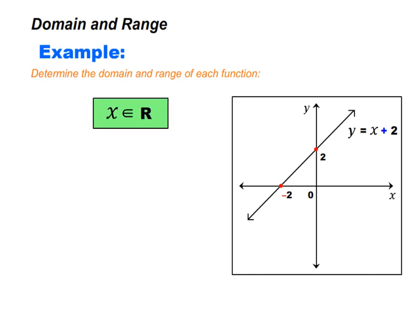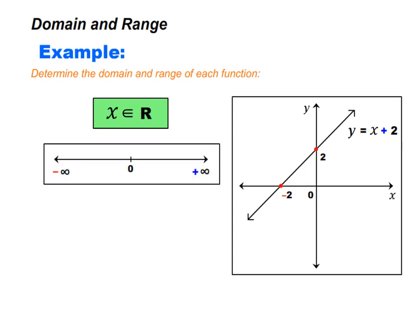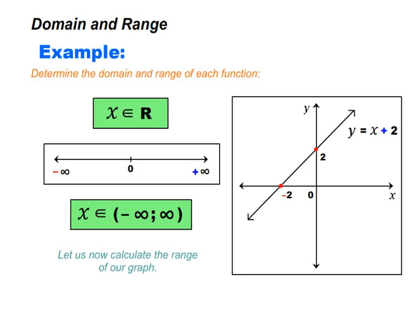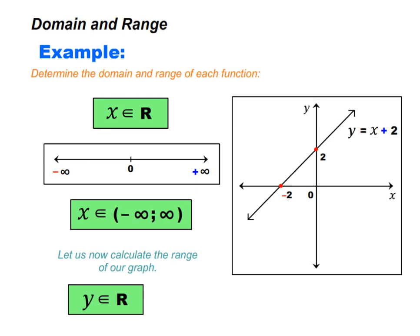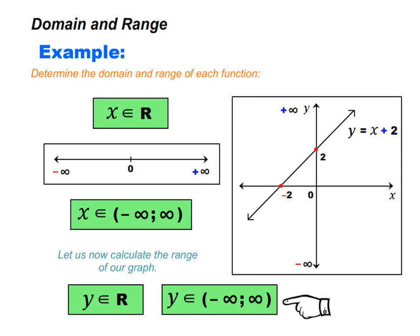There is another way to write our domain using interval notation. The graph uses all real x values from negative infinity to positive infinity, so we may write the domain as (−∞, +∞). For the range, looking at the vertical axis, the graph uses all y values, so the range is y is an element of real numbers — or equivalently, y is an element of (−∞, +∞).